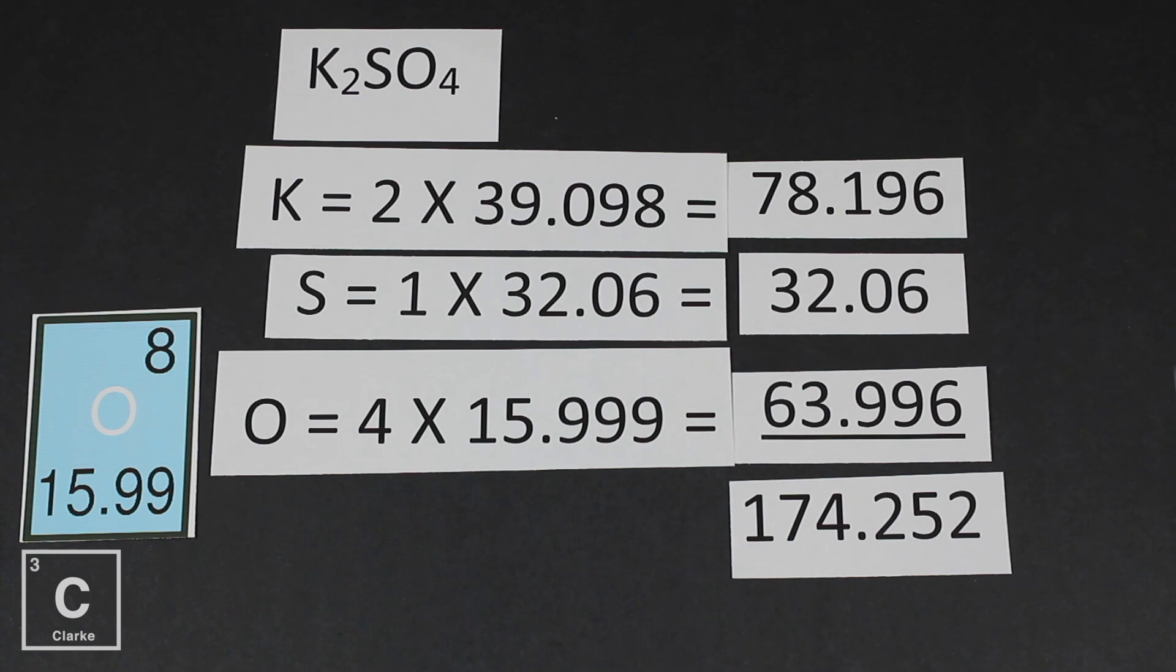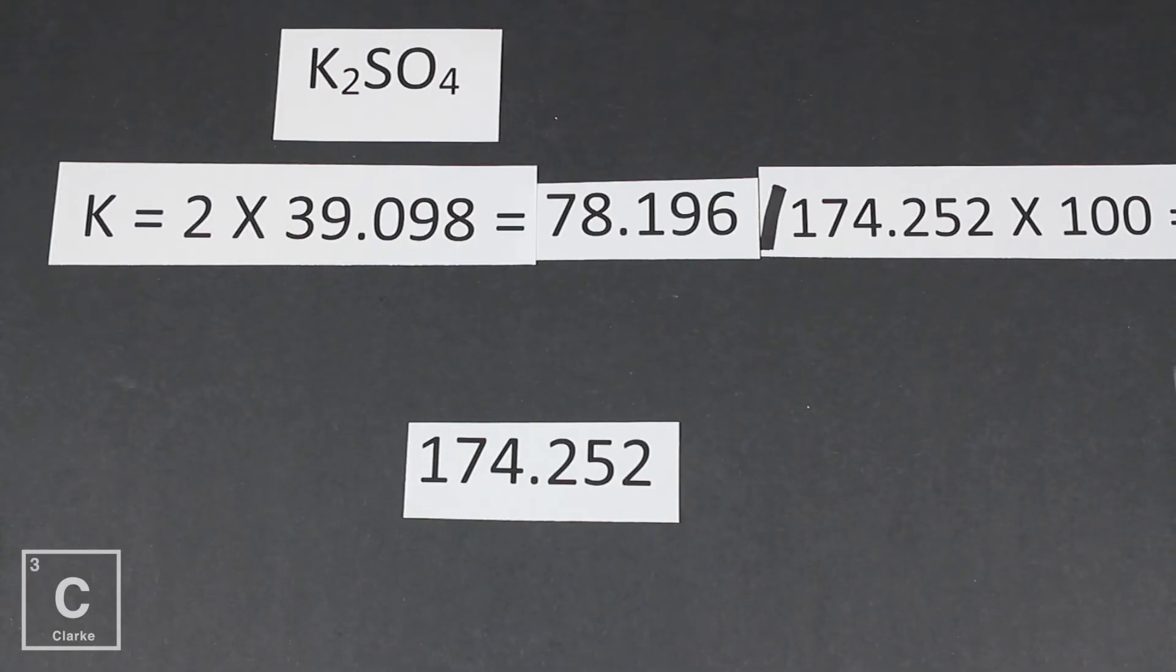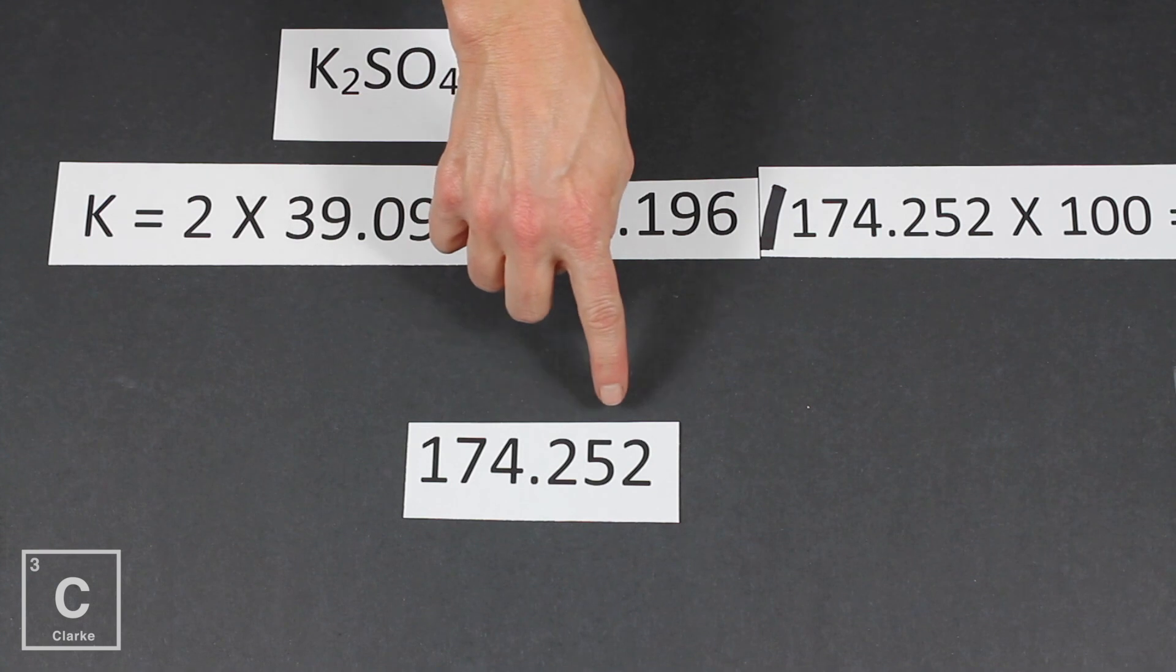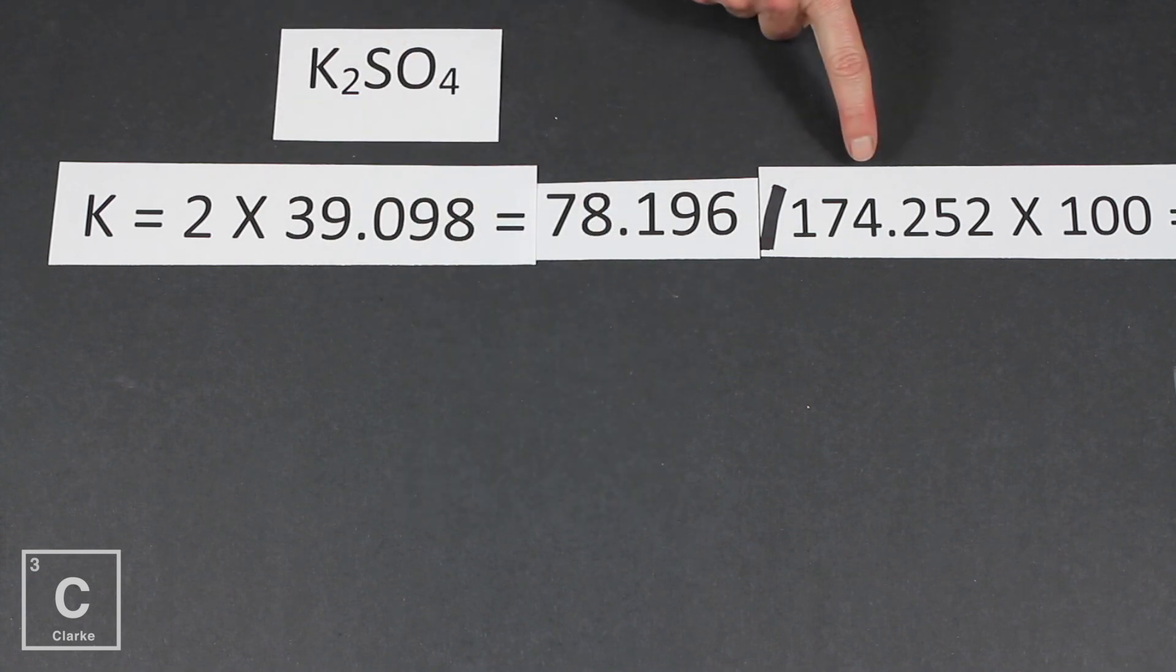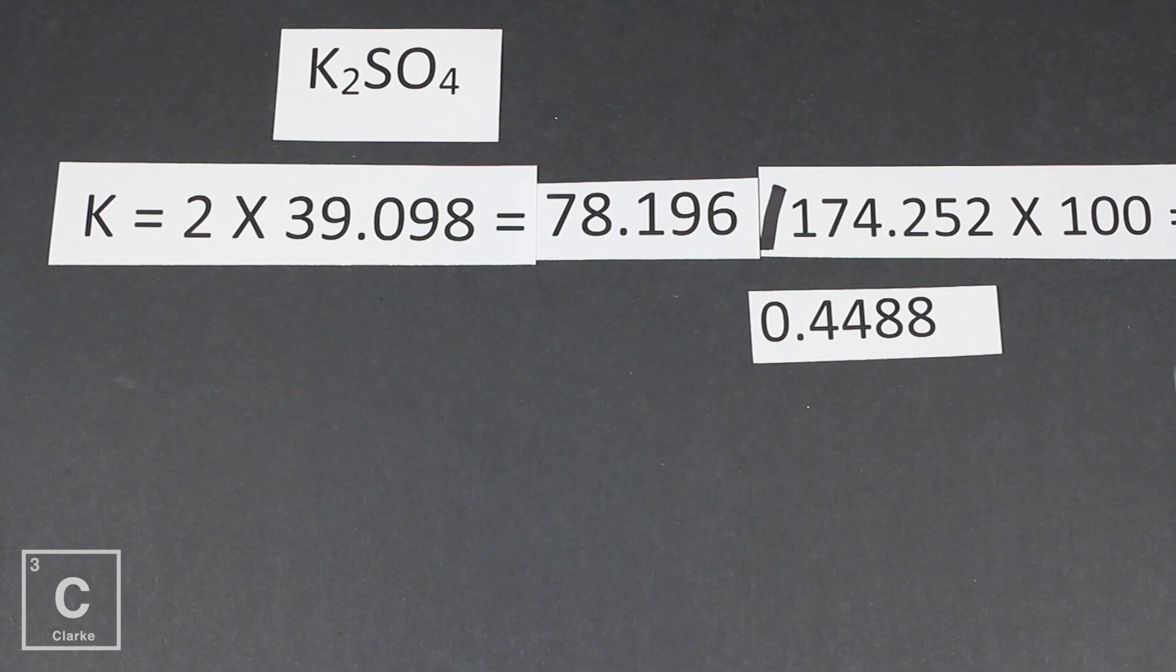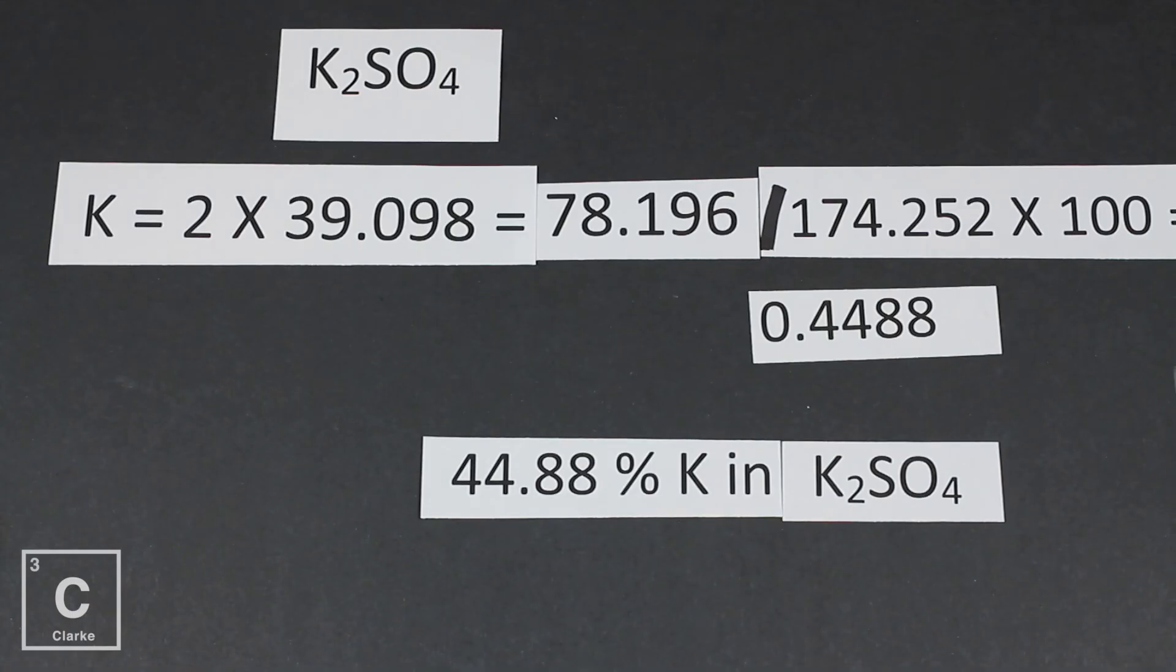Okay, so again, that formula said you got to take the individual elements molar mass and divide it by the total. And we were really only concerned about potassium. So remember that total molar mass, that was 174.252. If you take potassium's mass and you divide it by the total mass, we get 0.4488. Now again, we can multiply by 100 to get our percent, or you can just move over your decimal. So our final answer is 44.88% of potassium sulfate is potassium.